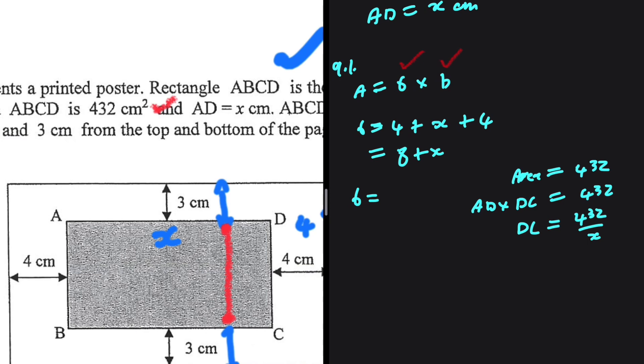That is why we are given the area of ABCD. So here we have 432/x.